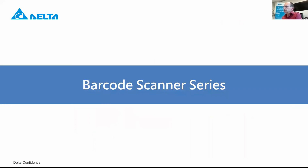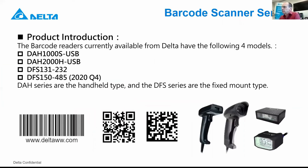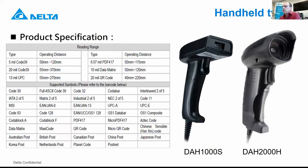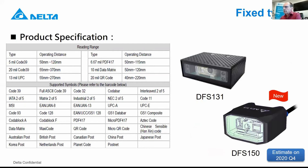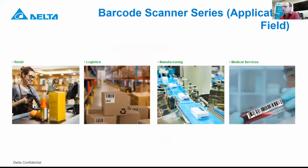The next one is barcode scanners. You already know our handheld barcode readers. We also have the fixed mounted DFS 131, based on RS-232 output. What is new and coming end of this year is the DFS 150, based on RS-485 communication. All our products support the barcode types mentioned here, covering many different types of barcodes. They can be used for retailing, logistics on boxes, manufacturing to read barcodes on packages, and medical applications, depending on what kind of barcode is used.